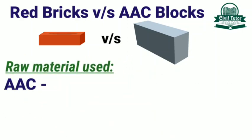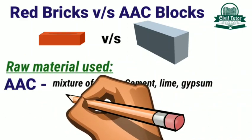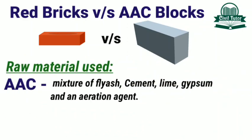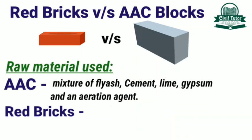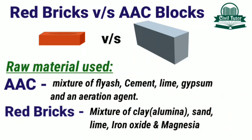AAC blocks are made from a mixture of fly ash, cement, lime, gypsum and an aeration agent. While red bricks are made from a mixture of clay — that is alumina — sand, lime, iron oxide and magnesia.